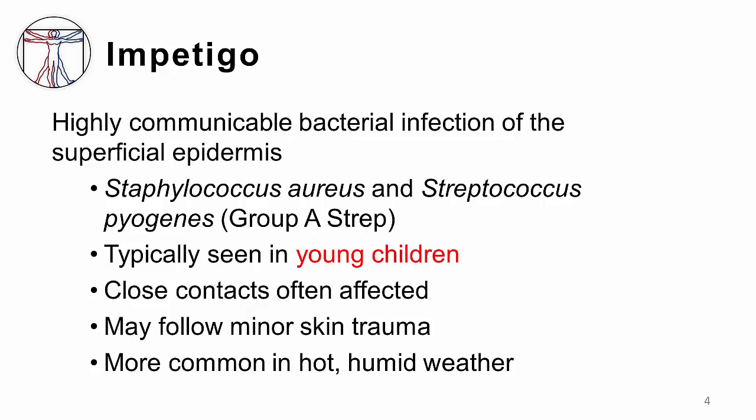Impetigo is a bacterial infection of the superficial epidermis, caused by Staph aureus and Strep pyogenes. It is one of the most common bacterial infections of children, and although it can occur at any age, it is most often seen between ages 2 and 6.